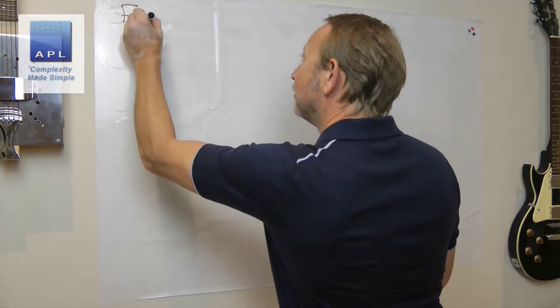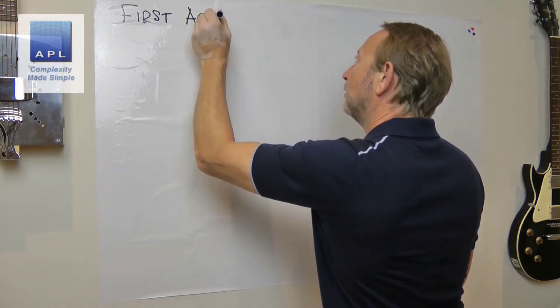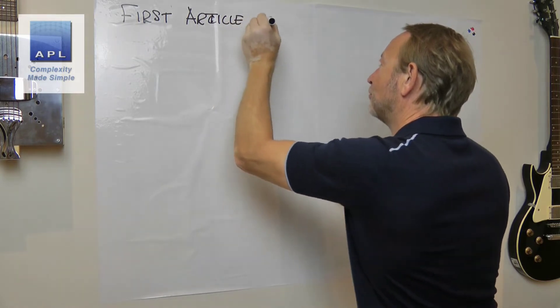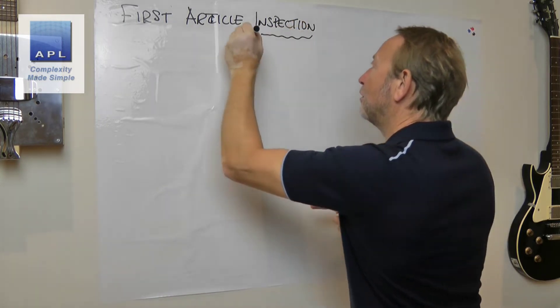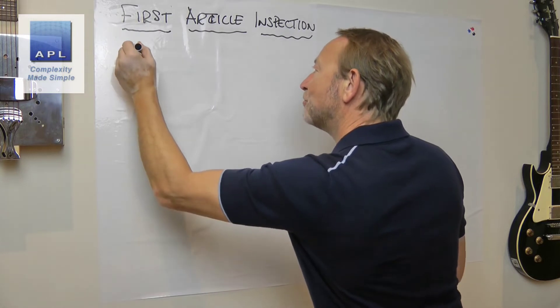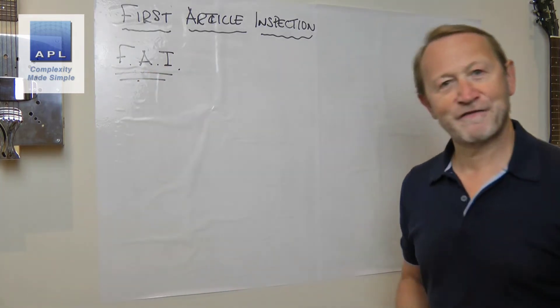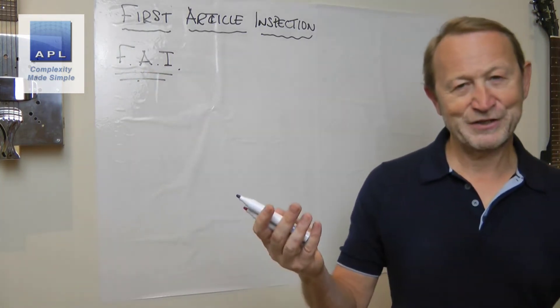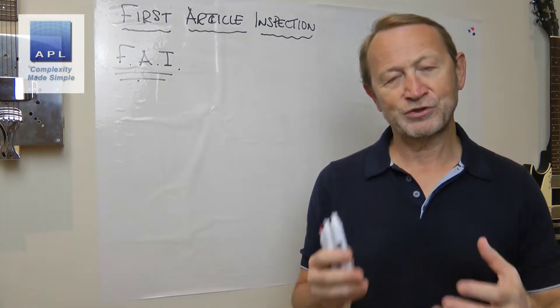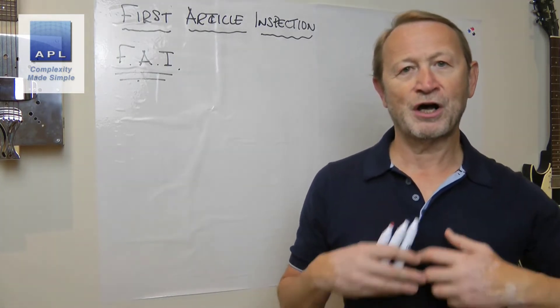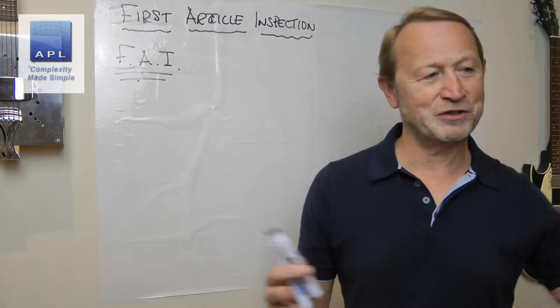I have a number of clients who use First Article Inspection. Like a lot of these things, they like to shorten it to a three-letter acronym and typically call it a FAIR. Here's the video: what is a FAIR actually for? Too many of my clients are using this technique as if it's a tell-all brilliant technique, that everything's wonderful about the process, we're going to produce defect-free, and everything's going to be fantastic, and this single piece is the golden sample.